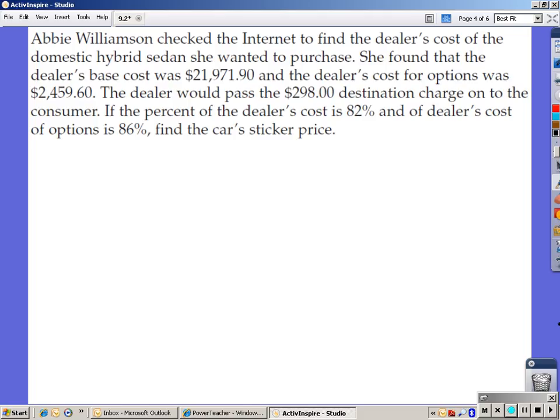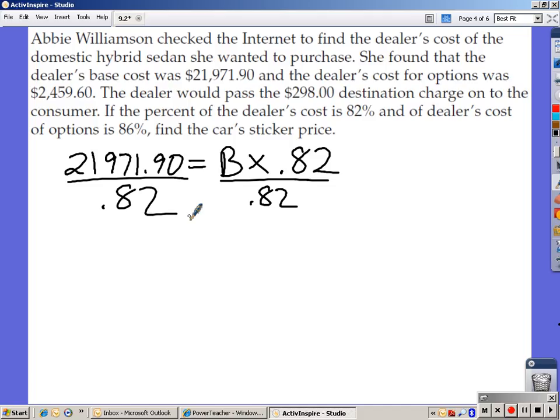In order to do this, we've got to work backwards a little bit. If the dealer's cost is $21,971.90 and that's found by taking B for base cost times the interest rate of 82%, if we work backwards, we divide both sides by .82. $21,971.90 divided by .82. That gives us $26,795 equals B. That's the actual base cost of the car, not the dealer's cost.